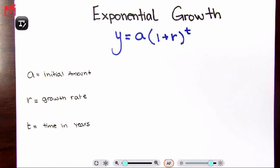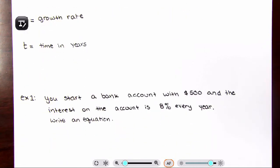Let's go ahead and start with an example. So let's say you start at a bank with $500. You go to the bank, doesn't matter what bank, you put in $500. And the interest on that account is 8% every year. So it accrues interest every year on that $500.